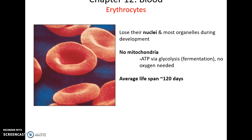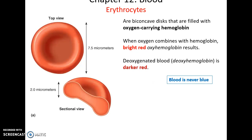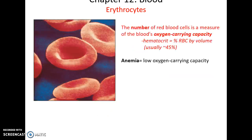Their average lifespan is approximately 120 days. They are biconcave discs, indented on both sides, which increases surface area for more gas exchange across their membrane. When the hemoglobin within them binds to oxygen, it is a bright red. When hemoglobin is no longer bound to oxygen, it becomes a darker red. So blood is never blue — it is always red.